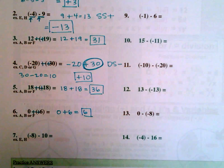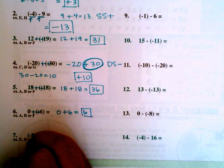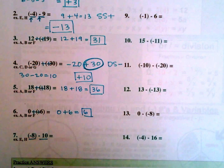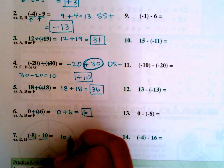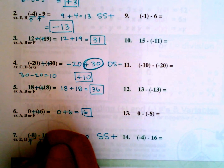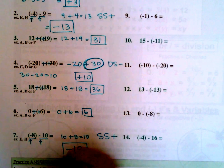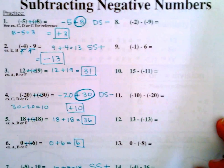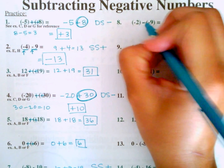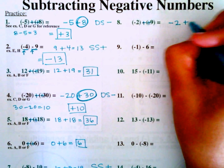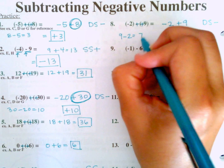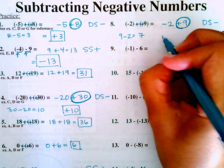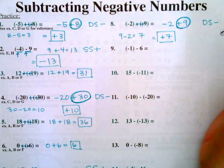Number seven: negative eight minus ten — same sign, so we add: ten plus eight equals eighteen, and adding two negative numbers makes a larger negative, so negative eighteen. Number eight: negative two minus negative nine — this becomes plus positive, so negative two plus nine. Different signs, so subtract: nine minus two equals seven. The larger number is positive, so the answer is positive seven.